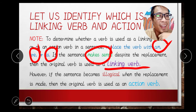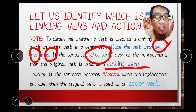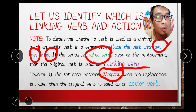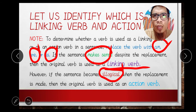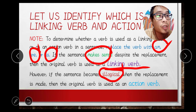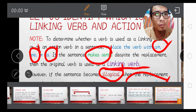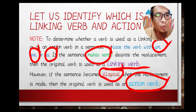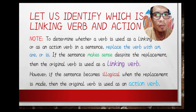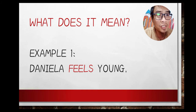If the sentence still makes sense after the replacement, then the original verb is used as a linking verb. However, if the sentence becomes illogical — meaning it cannot be understood — after the replacement, then the original verb is used as an action verb. I will elaborate with examples.